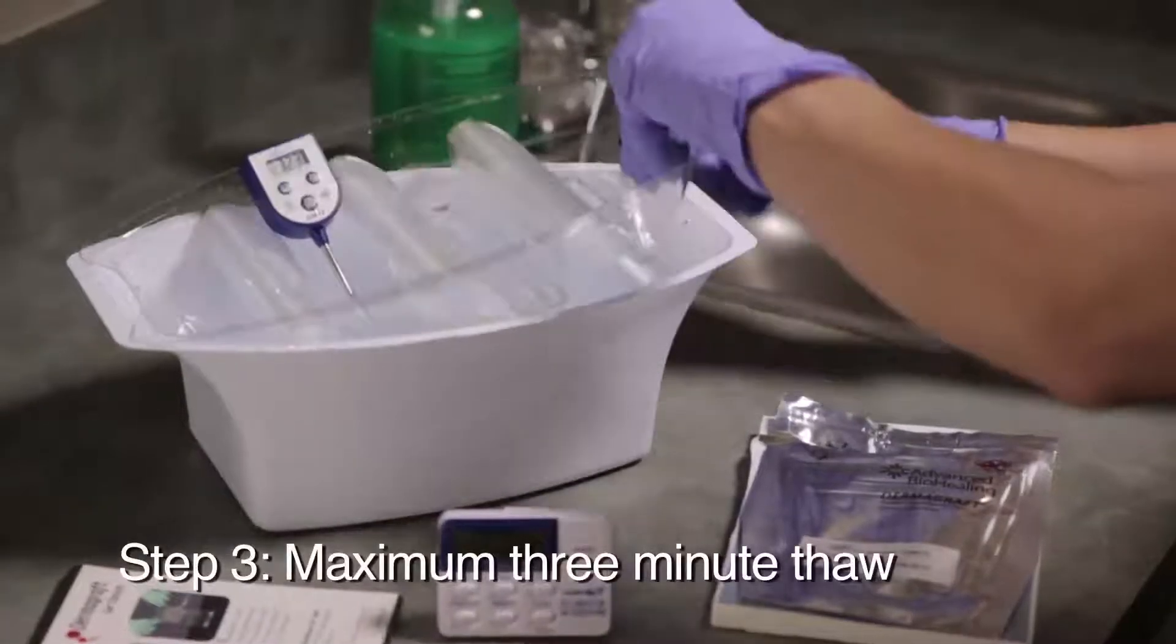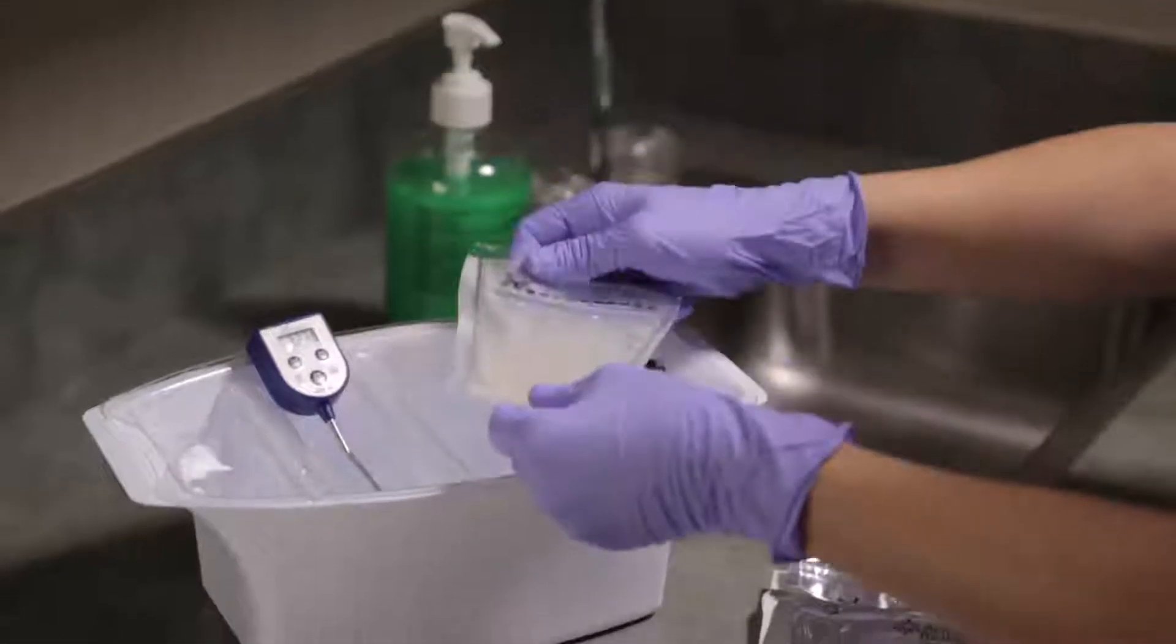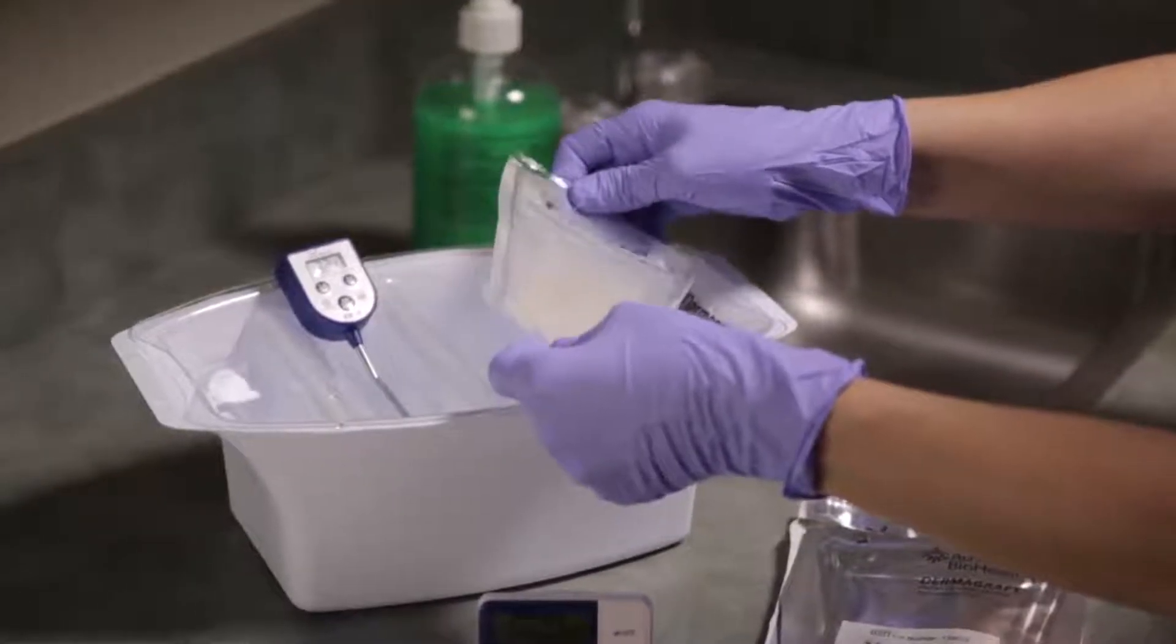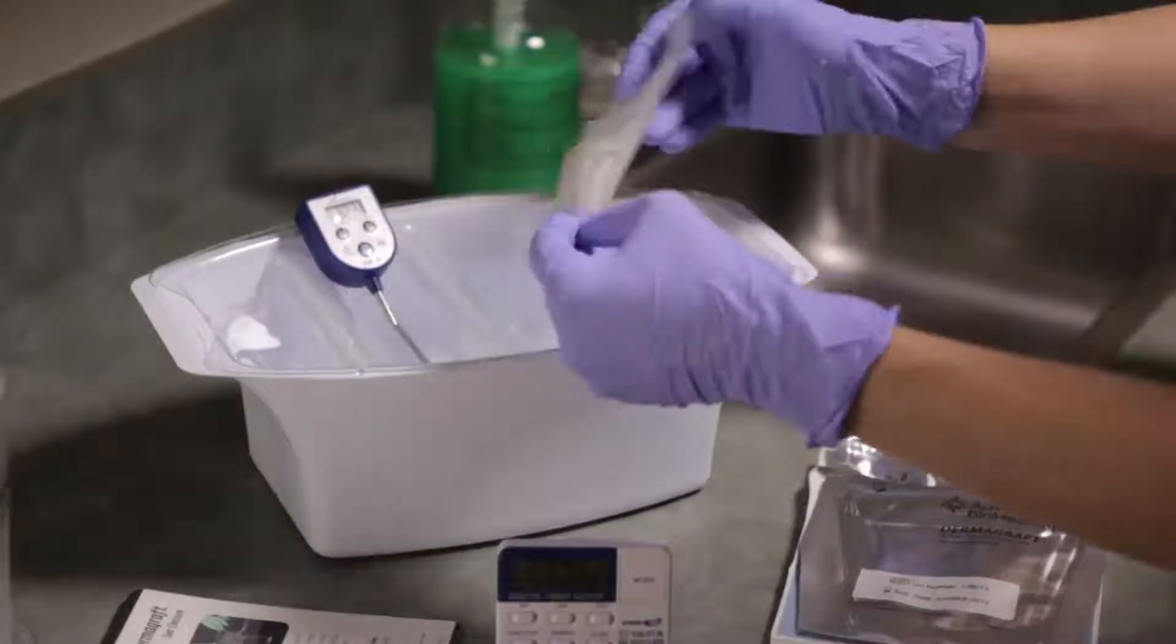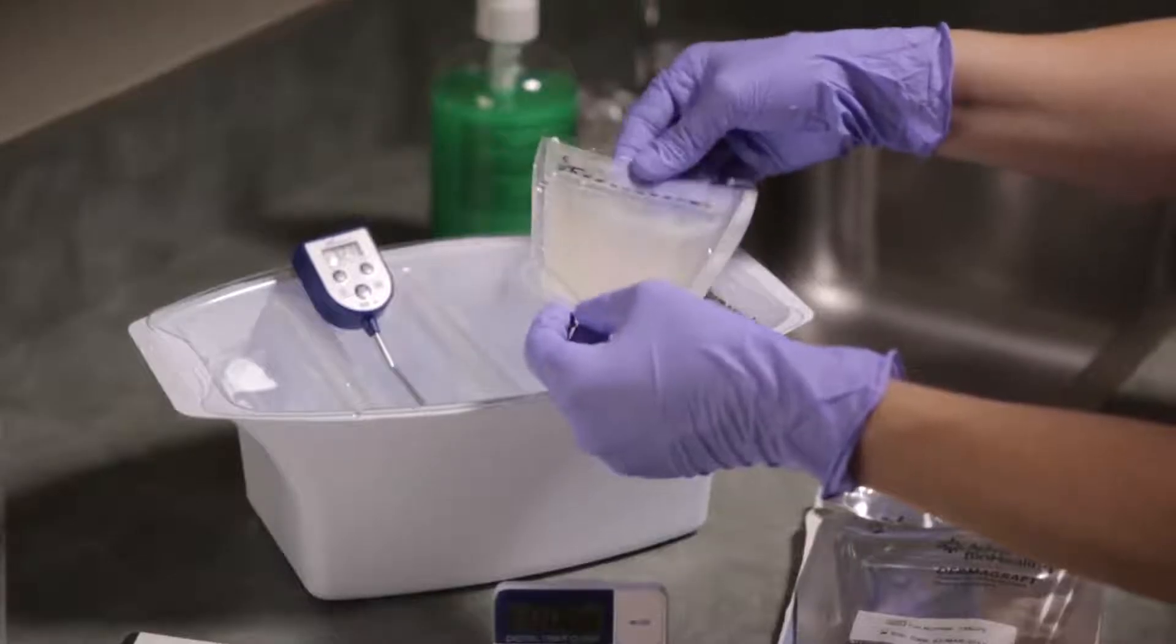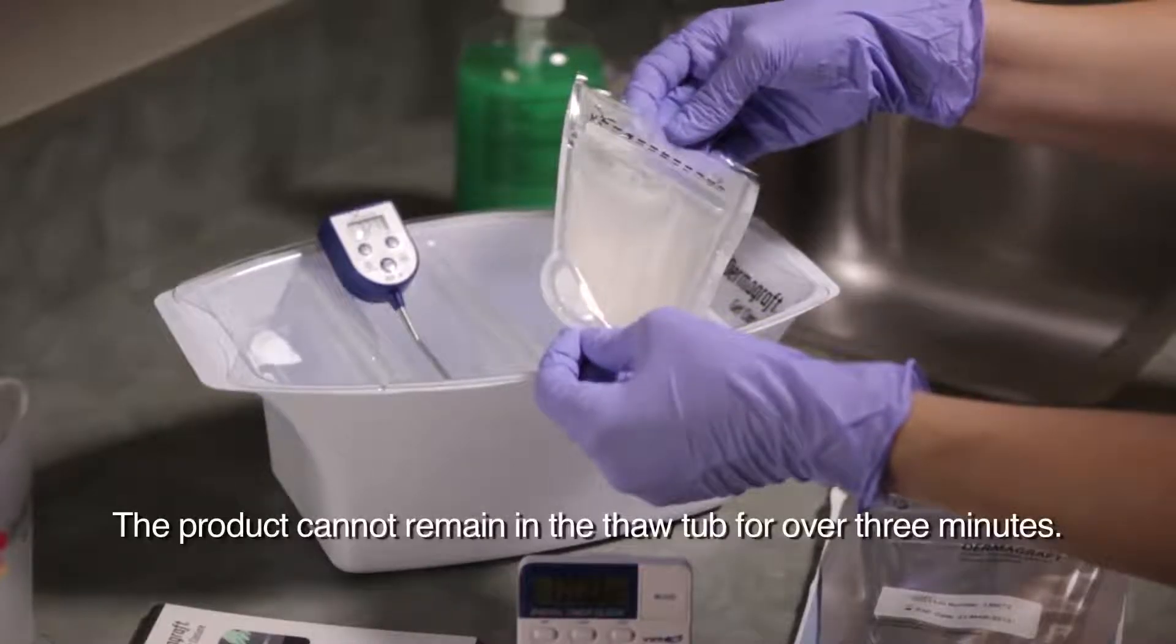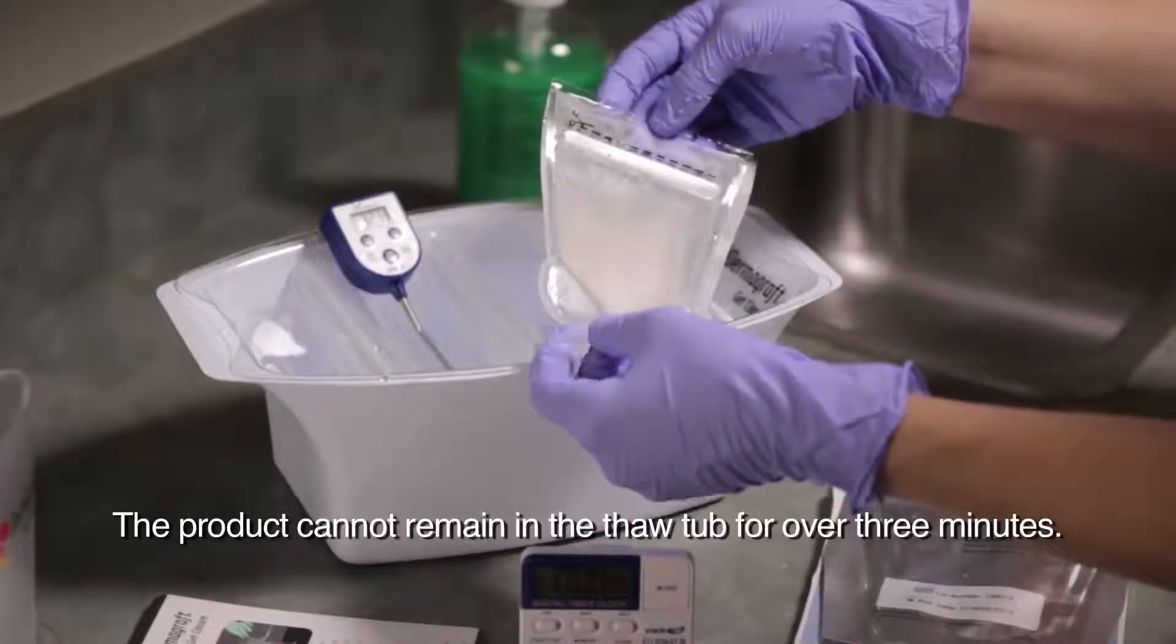Step 3: Maximum 3-minute thaw. When the timer alerts you at the end of two minutes, remove the Dermagraft from the tub, handling it from the corners. Look to see if there are any ice crystals floating inside the pouch. If you see any ice, place the product back into the water tub for another 15 or 20 seconds. This should be sufficient, but keep in mind that the product cannot remain in the thaw tub for over three minutes total.